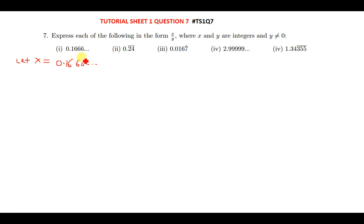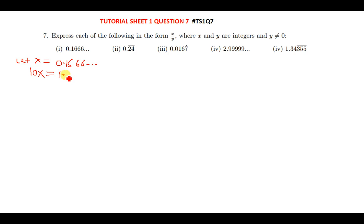We can see that the number repeating here is 6. We are going to move the decimal point one step closer to the repeating number. Moving one step means multiplying by 10, so we get 10x = 1.6666..., where 6 is still repeating.